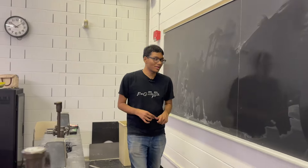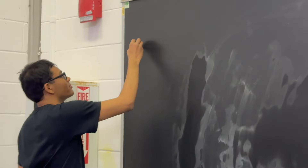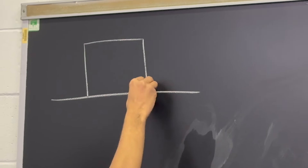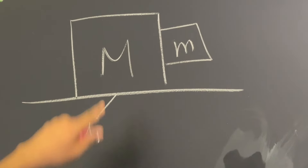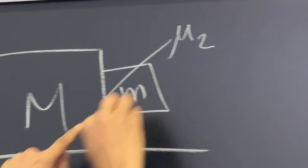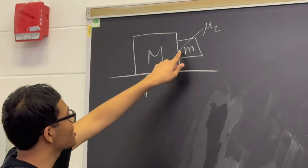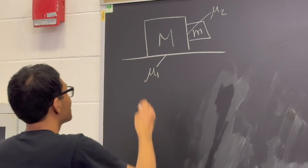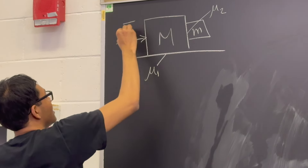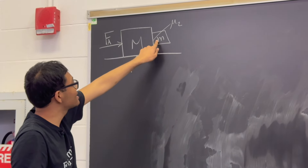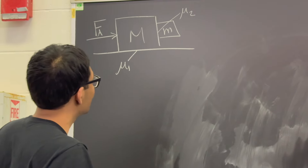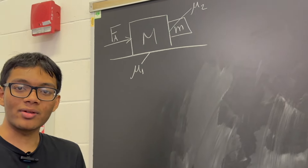We've seen enough of that explanation — also known as the incorrect one. Let me show you what the correct explanation looks like, giving you an intuitive understanding of the problem. We have two boxes: a big box of mass M and a small box of mass m. There's a coefficient of friction between the big box and the ground, and a coefficient of friction between the two boxes that keeps the small box from sliding down.